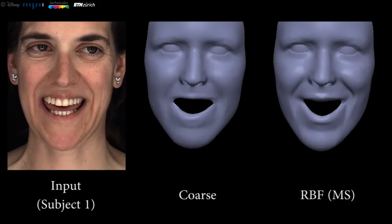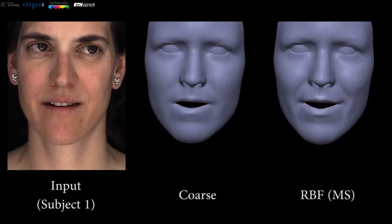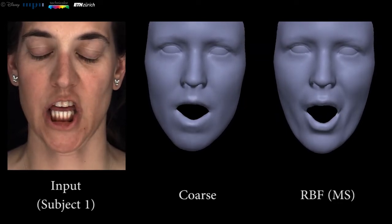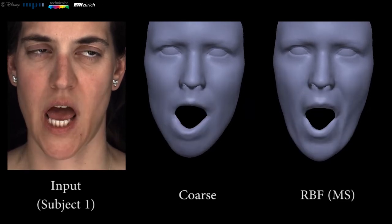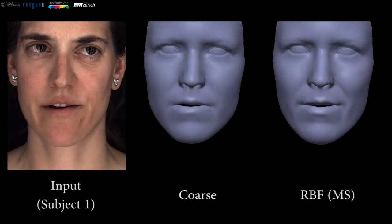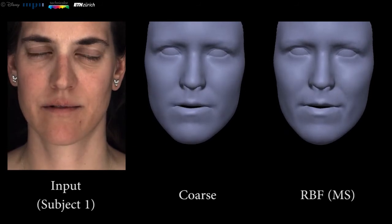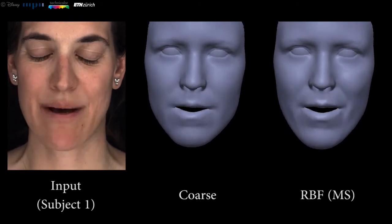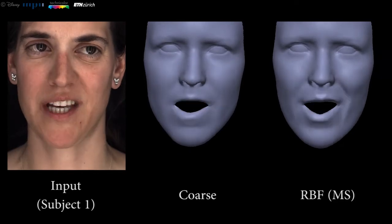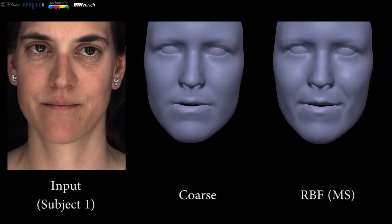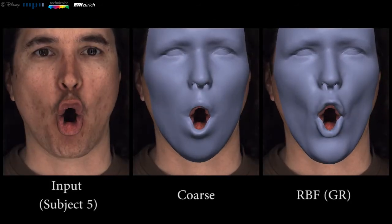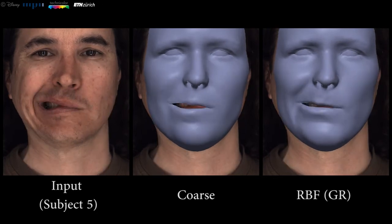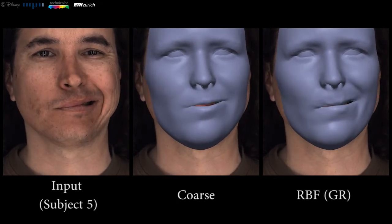"I'm going to give you the things you want most, Barry. But it won't matter, because you will never truly be happy. Trust me." Here's another sequence captured in the controlled setup, but note here that we use the generalized regressor, which means that the subject was not part of the training set.